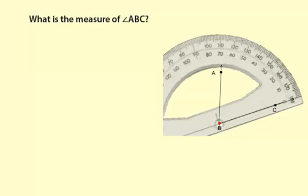Then you align one of the rays which makes up the angle — in this case ray BC — with the zero degree line.